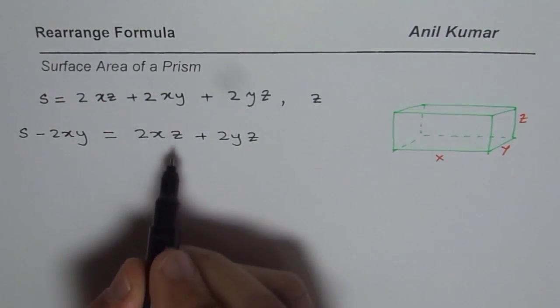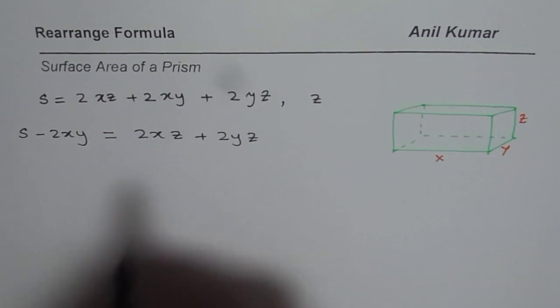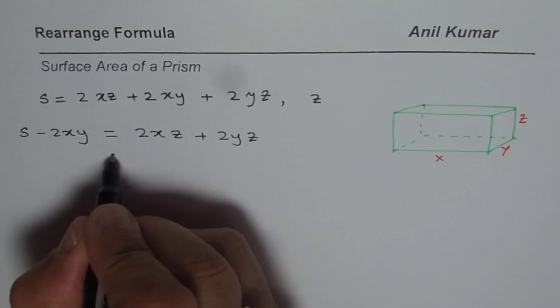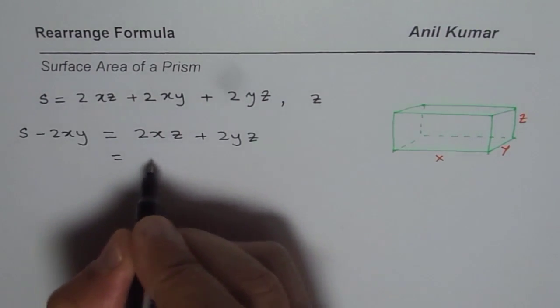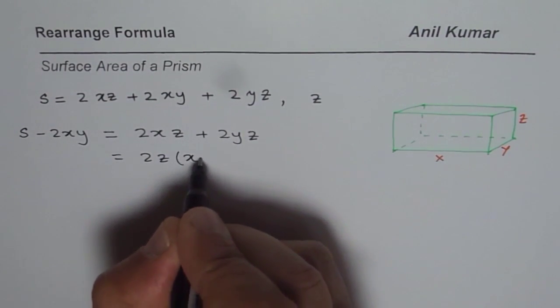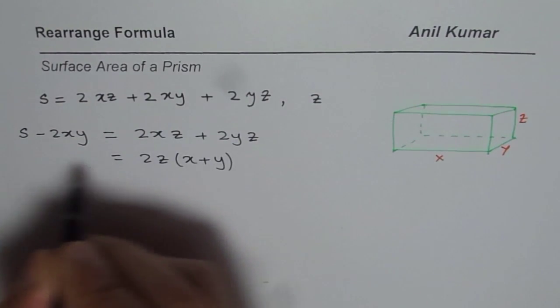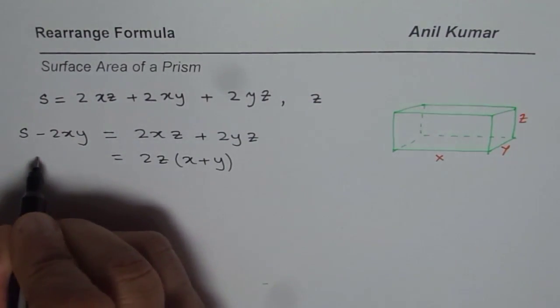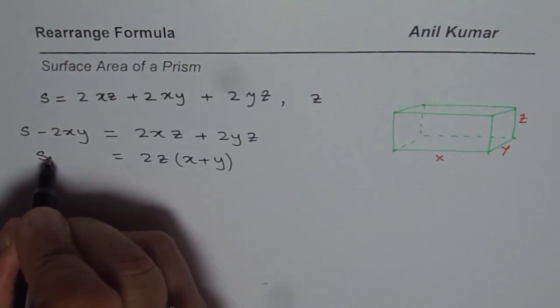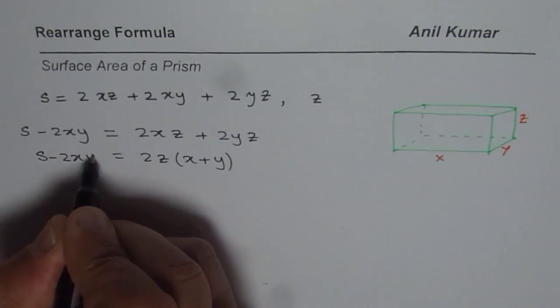Now we can factor out 2Z from the right side. If I factor 2Z, I get 2Z times (X + Y) on the right side, and on the left side we still have S minus 2XY.